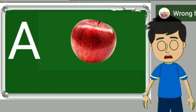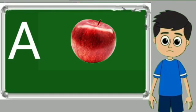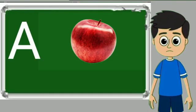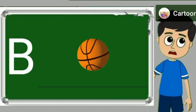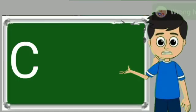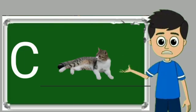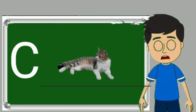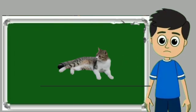A for apple. Apple means save. B for ball. Ball means gain. C for cat. Cat means billy.